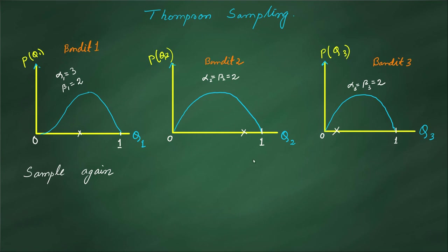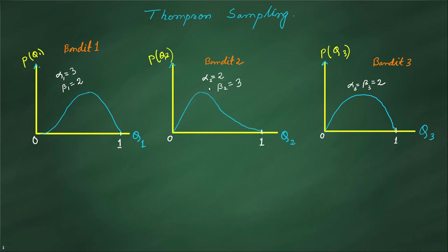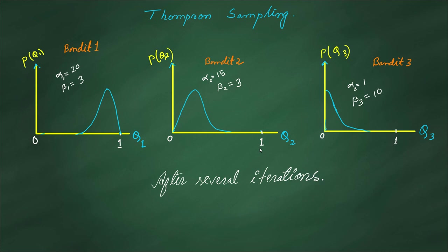This time the maximum sampled value comes from the second distribution, so we play that bandit. Let's say we lose this time and get zero reward. We update by adding plus one to beta and keeping alpha as it is. After this update, the second bandit's distribution shifts a bit towards lower Q values, and this serves as the new prior for the second bandit.